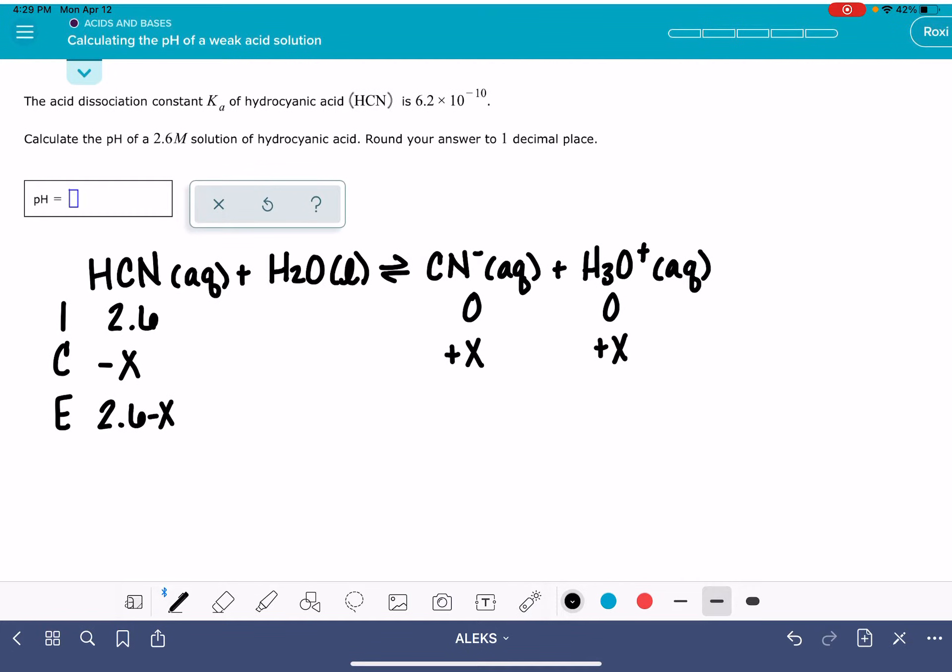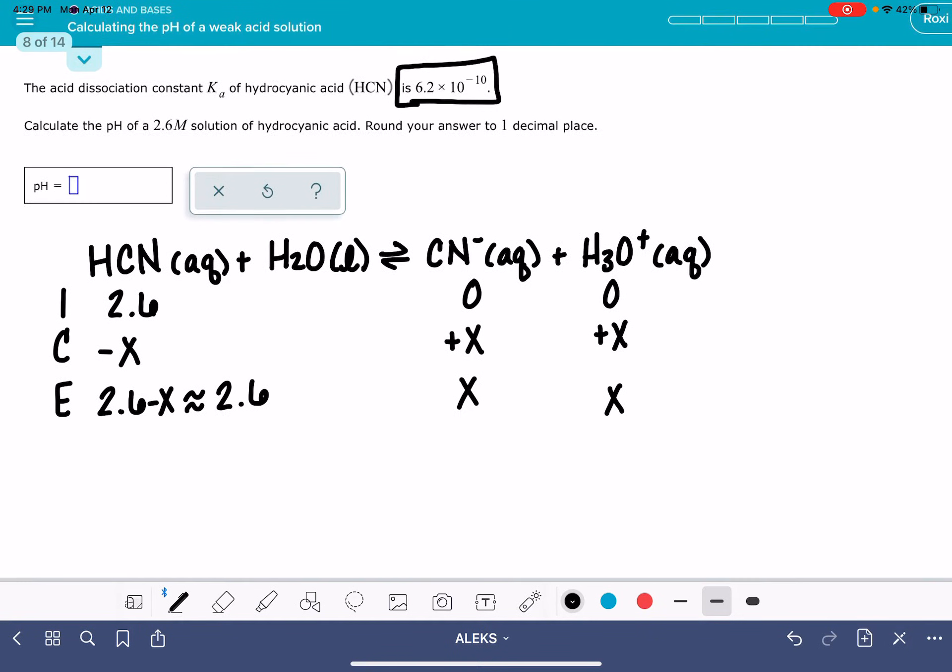We're going to make the assumption that because the Ka value is so small, the value of X is also going to be super small. The value of X is going to be nothing compared to 2.6. So we're going to assume that 2.6 minus X is just going to equal 2.6, and our products will be X and X.